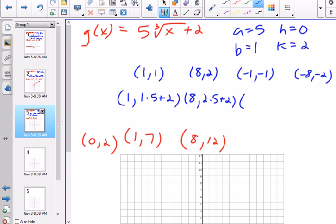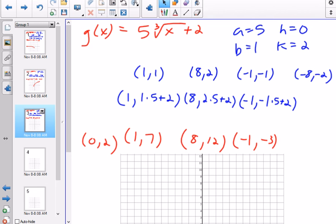Now let's go on the negative side. Negative 1 is going to stay the same. So then negative 1 times 5 plus 2. So negative 1, negative 3. And then negative 8 will stay the same. Negative 2 times 5 plus 2. That's going to be at negative 8 and negative 8.